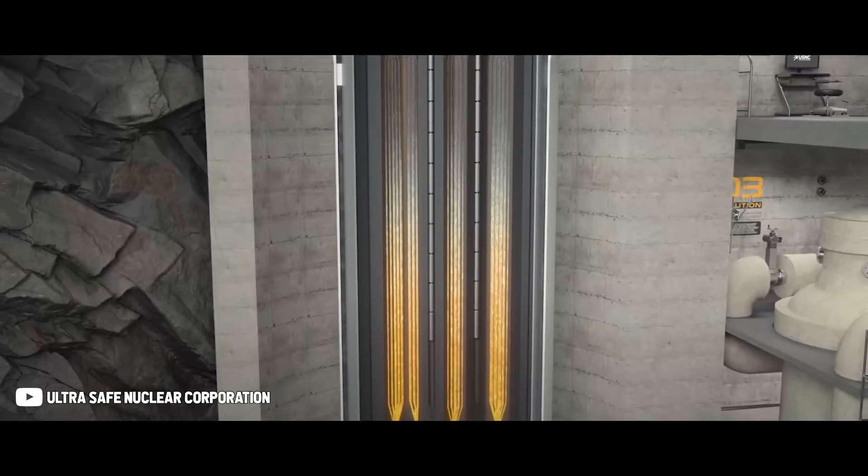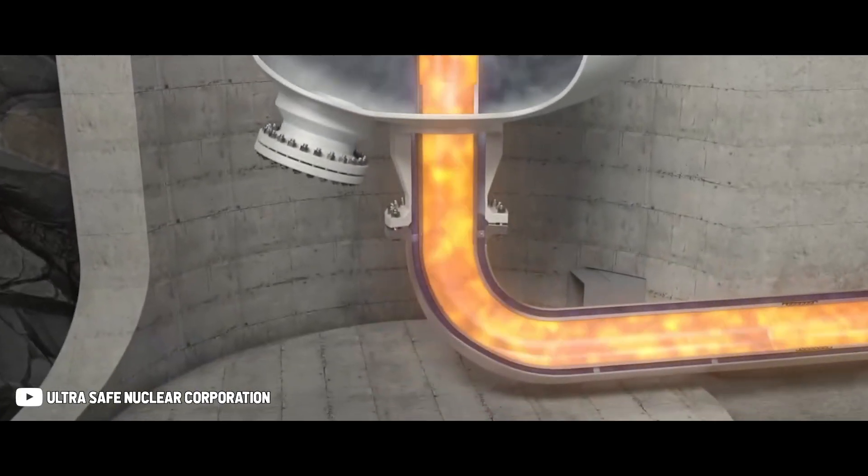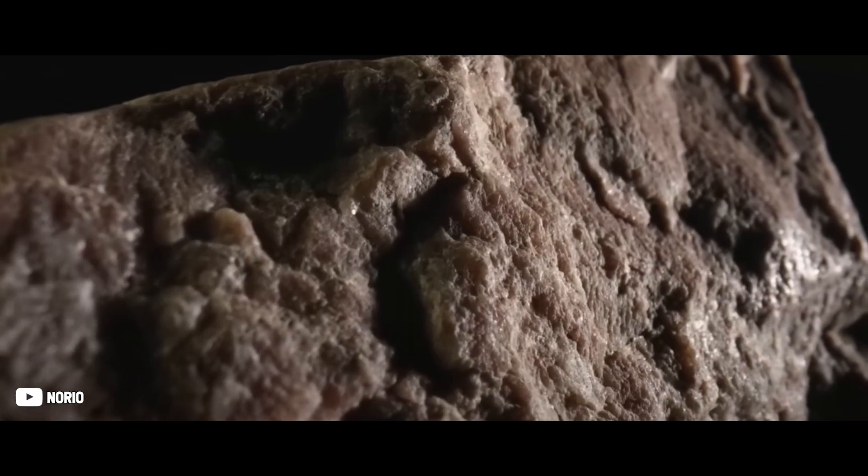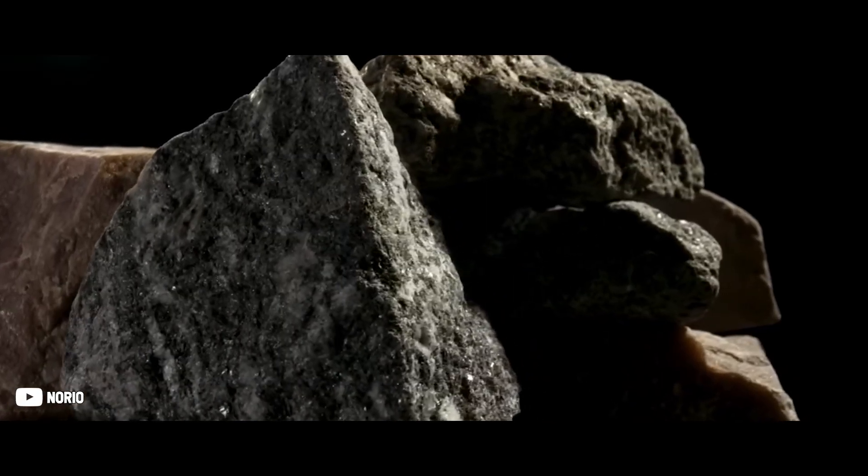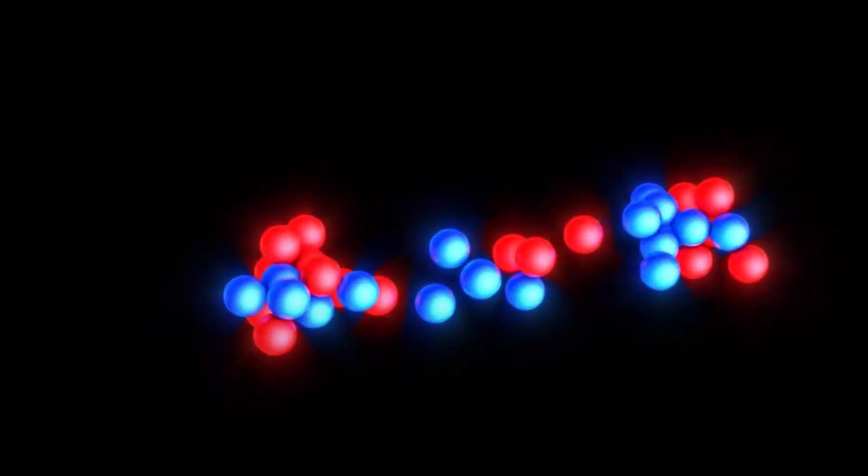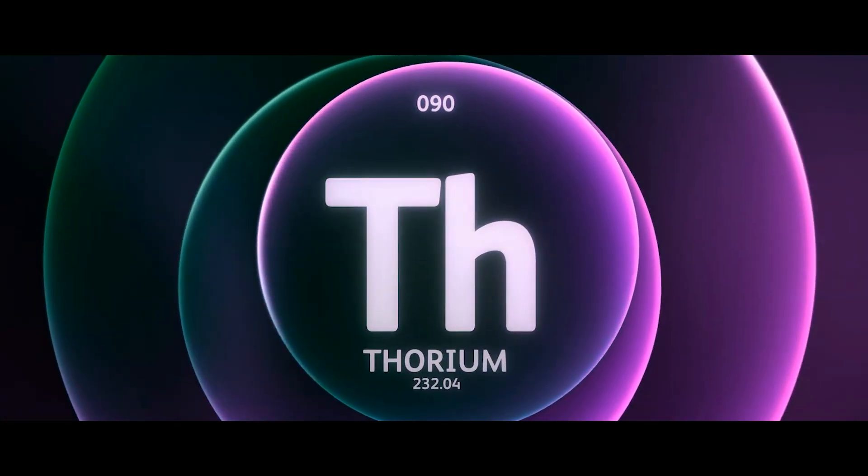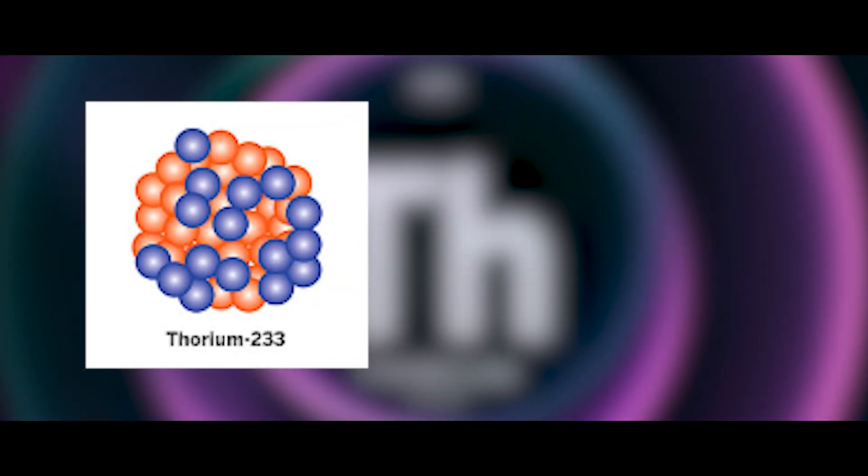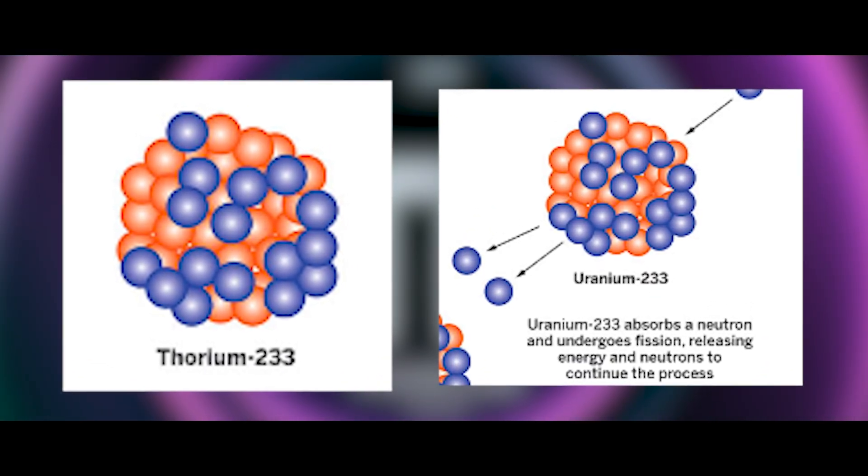But as it turns out, molten salt reactors are an excellent option for clean and safe nuclear energy generation. However, thorium is a low-radioactive material in its naturally occurring form, so it is unsuitable for nuclear fission and must be transmuted in a thorium fuel cycle. The fertile isotope thorium-232 is transmuted into thorium-233 by absorbing a neutron from an external neutron source.